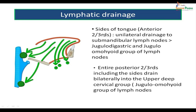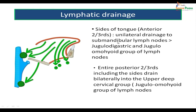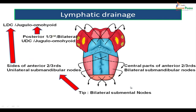The sides of the anterior two-thirds drain to the submandibular group on one side, then to the jugulo-omohyoid group. The entire posterior one-third — including the sides of the tongue — drains bilaterally into the upper deep cervical group (jugulodigastric) lymph nodes. From there, the lymph finally drains into the jugulo-omohyoid or lower deep cervical group of lymph nodes.